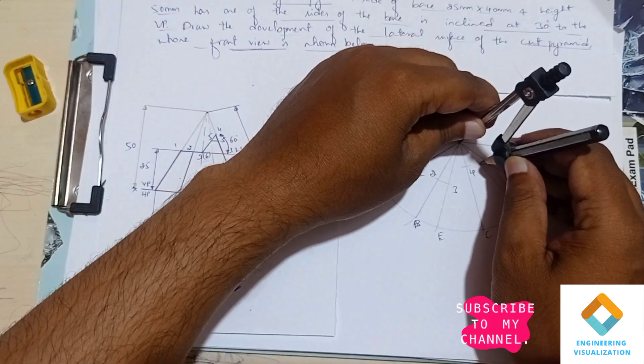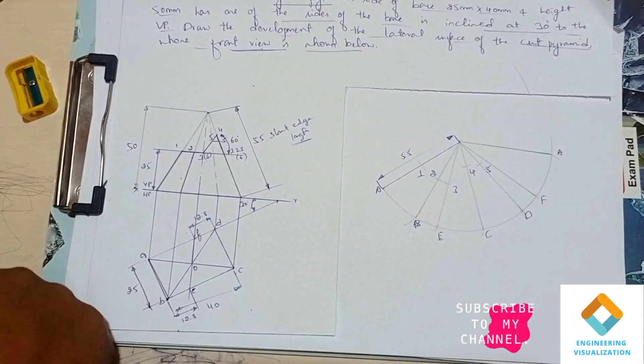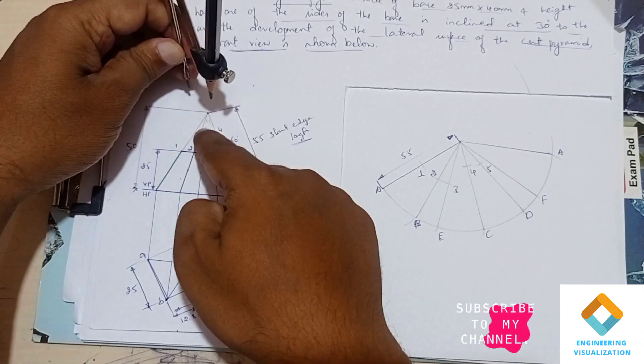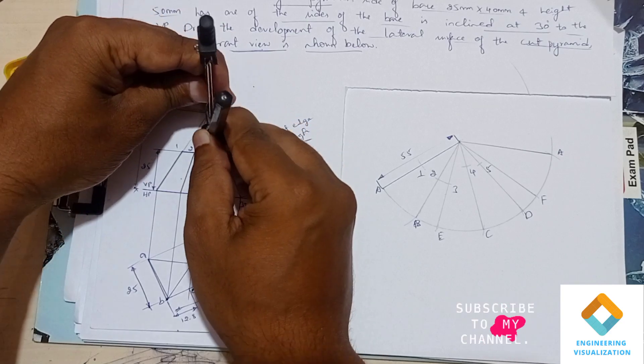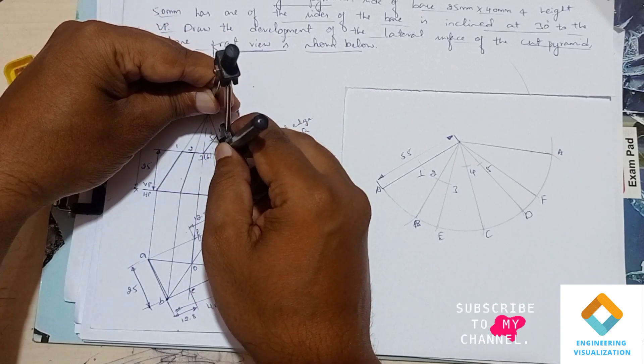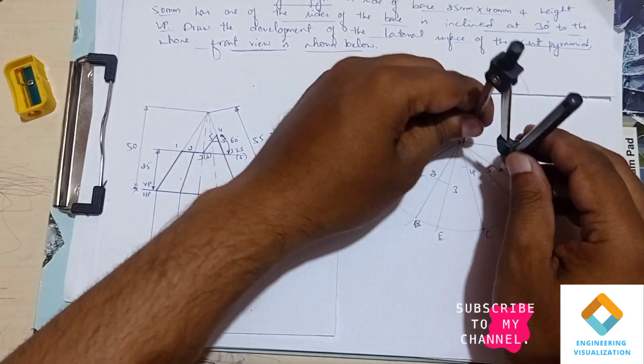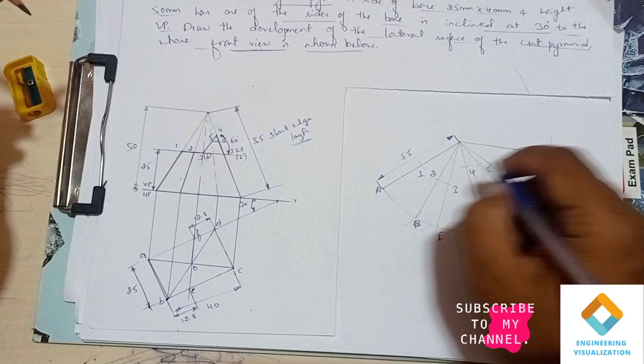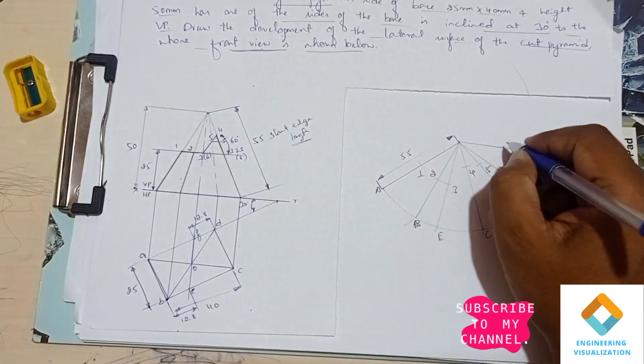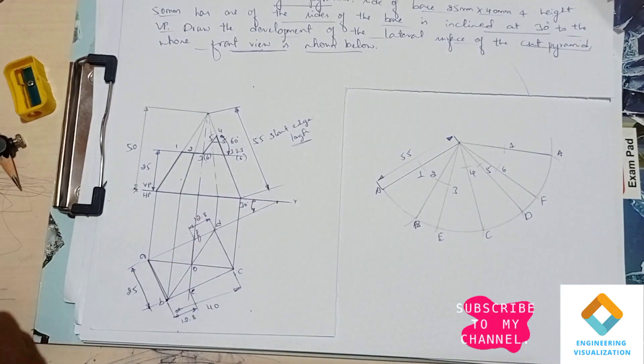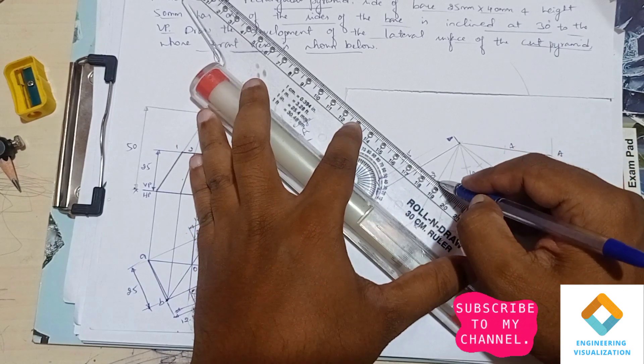Now point number six. Point number six also has the same length and is falling on the slanted edge of F. Measure the same length on the slanted edge and cut the arc. And then again point number one is having the same length, cut with the same arc length. Now we have to connect all these one, two, three, four.